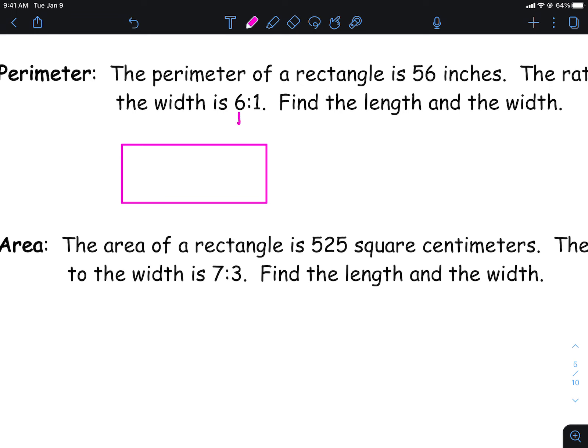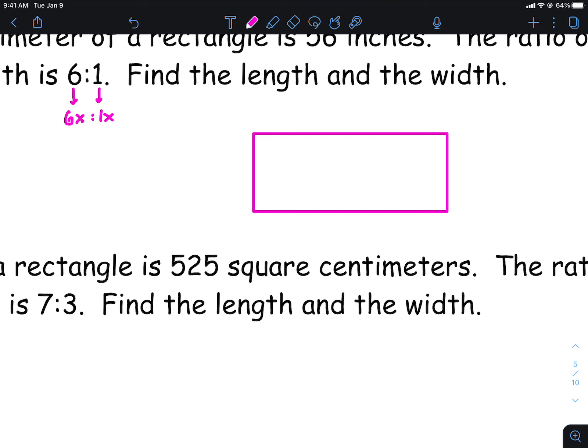And then here's what I want y'all to write here. If you have 6 to 1, that's kind of like saying that's the same thing as 6x to 1x here. And what we're going to do here is label our rectangle with those dimensions, because you don't want to just put 6 and 1, because we've got some type of scale that we need to use there. So I'm going to write 6x and 1x.